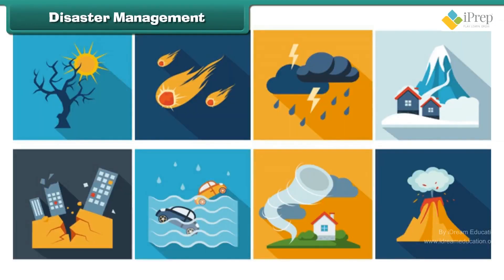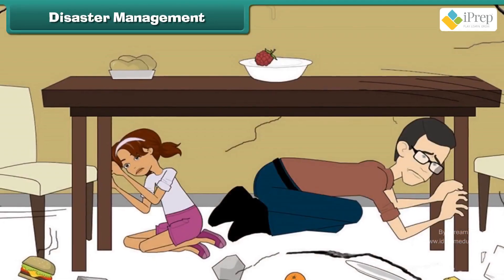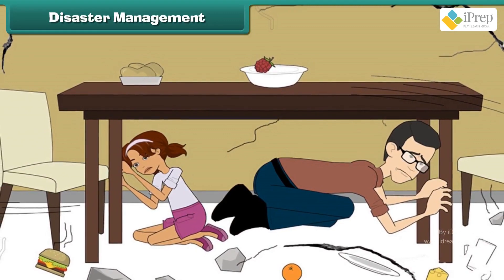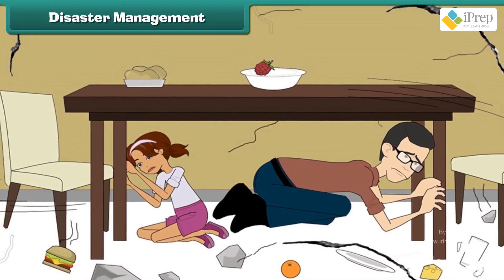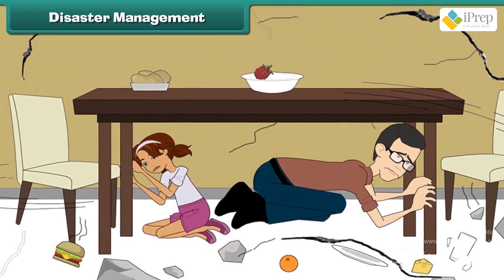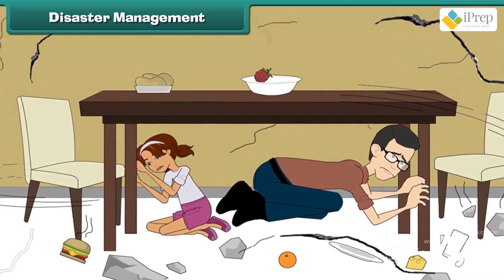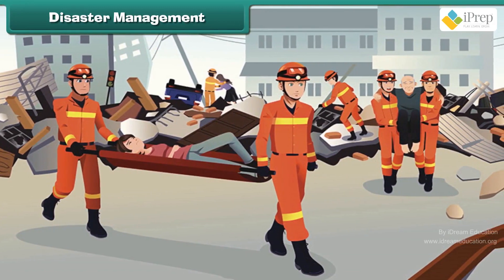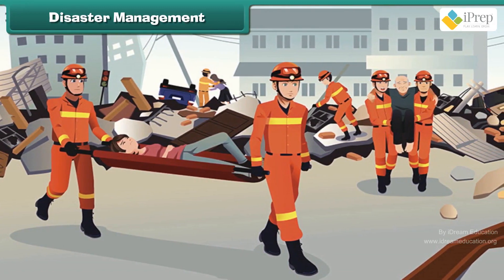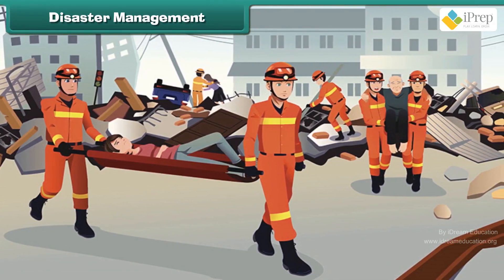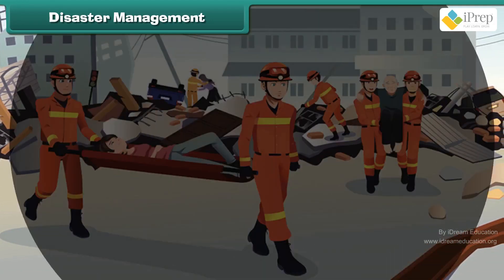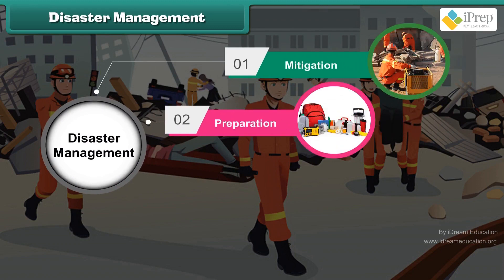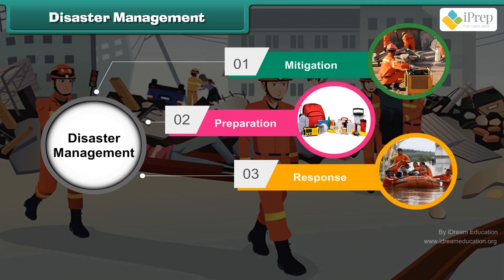Disaster Management refers to the measures taken for the safety and protection of life and property from natural or man-made disasters. When a disaster strikes a society, external help is usually needed in the form of aid to cope with its impact. The four phases of disaster management are mitigation, preparation, response, and recovery.